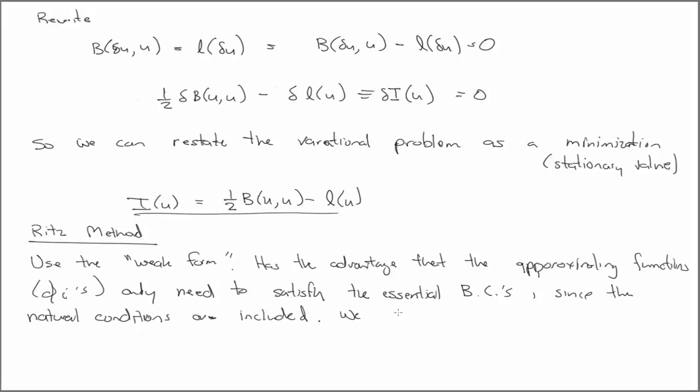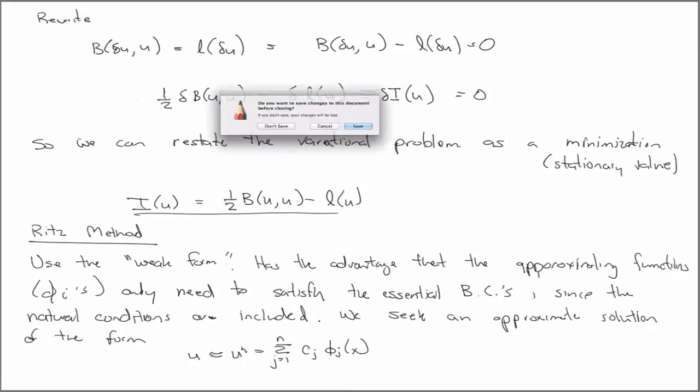So here we seek an approximate solution of the form u approximated by u_h. We have some unknown coefficients times some approximating functions or interpolating functions. And we'll find the c_j's by minimizing the functional.